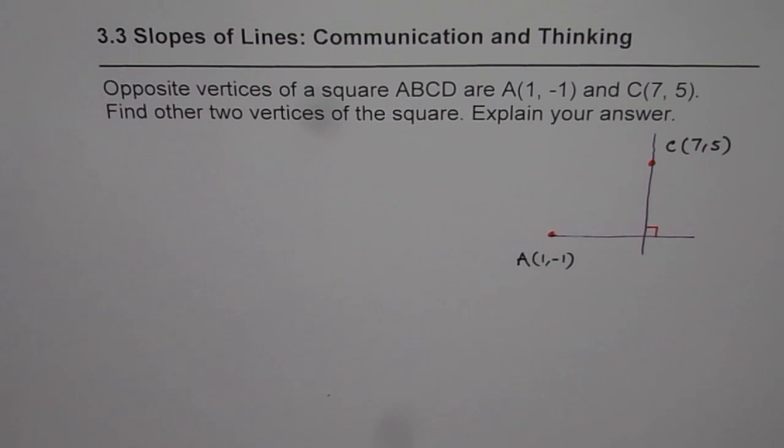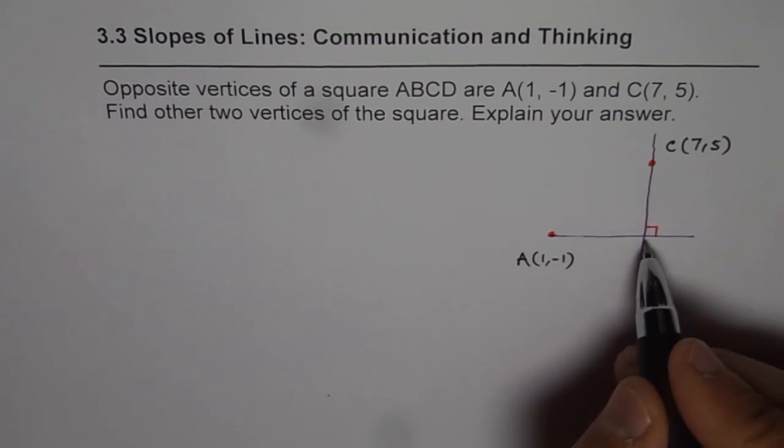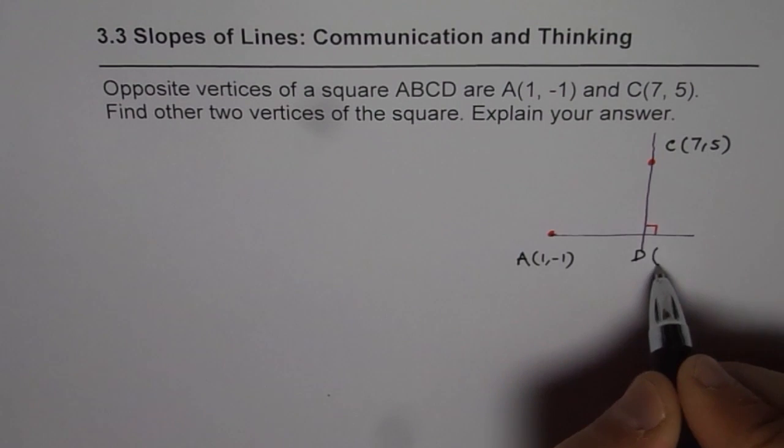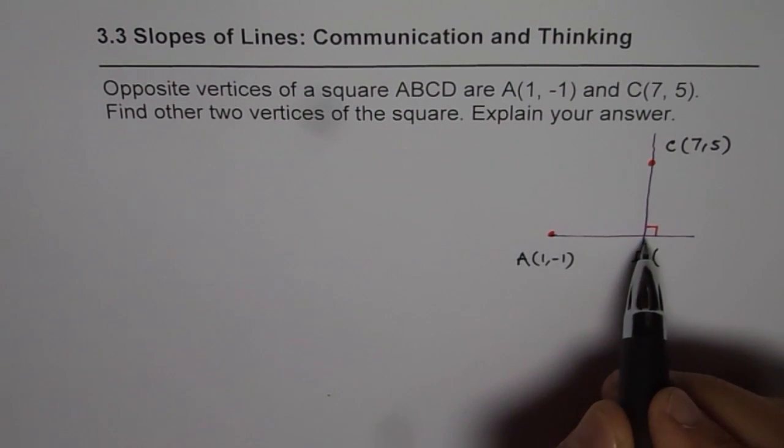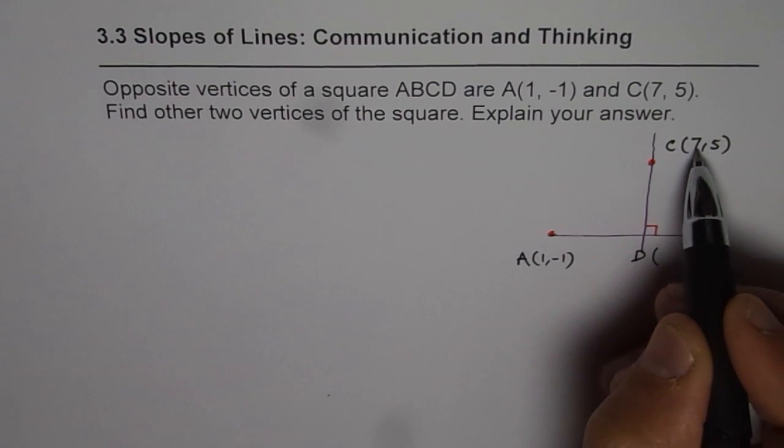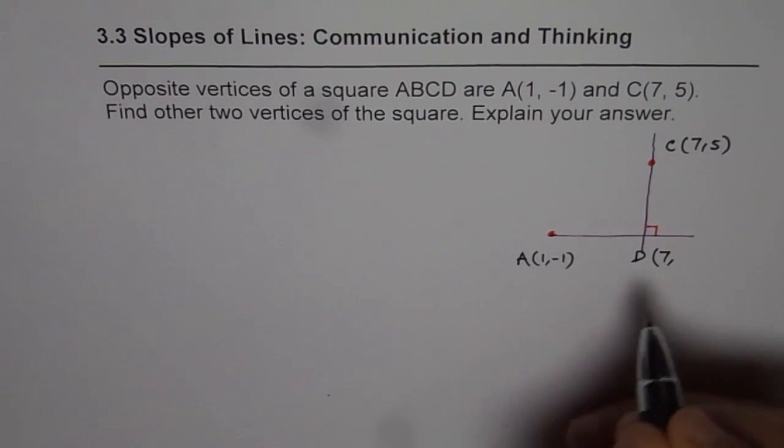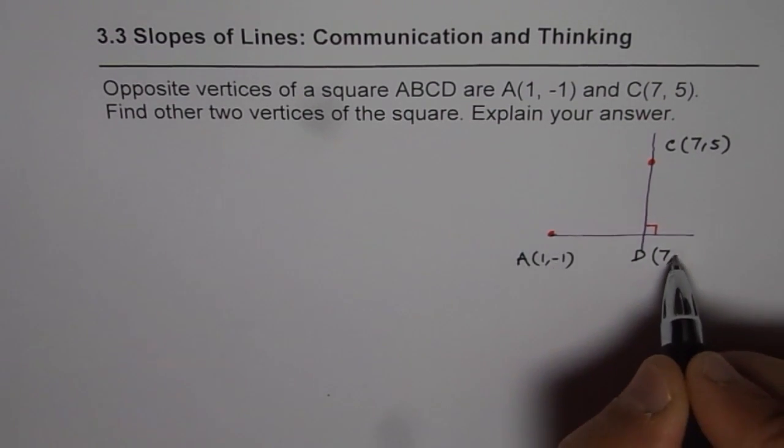So, if they intersect, at which point will they intersect? This point, let me call this point as D. They are going to intersect at X value of 7 and Y value of minus 1. Do you see that?